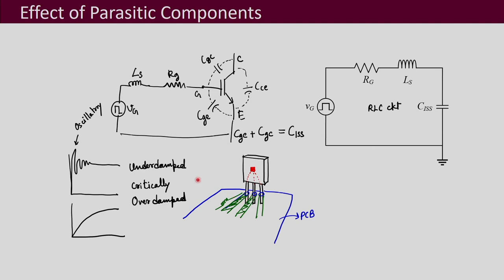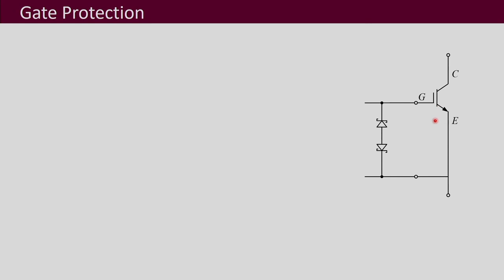One of the ways of reducing LS is that the PCB layout should be designed so that the driver is placed as close as possible to the gate and emitter points. The wiring length of the traces should be as small and as straight as possible so that your LS is minimized. We should also think of some protection, as there can be oscillations and spikes or transients that may damage the gate-emitter region.